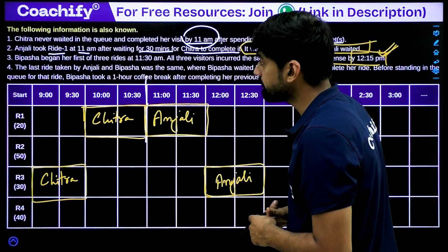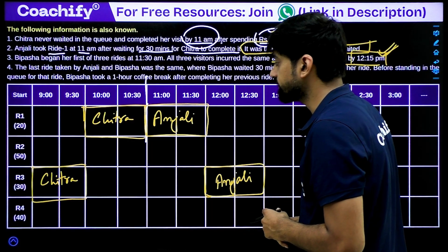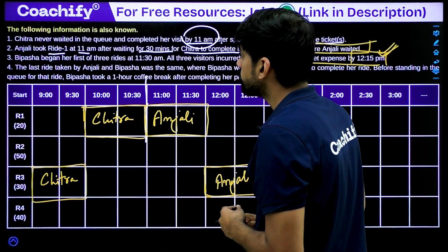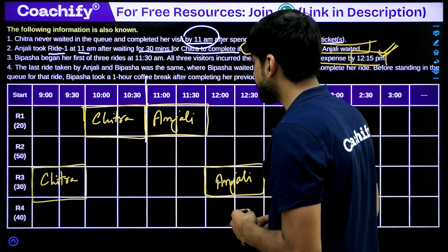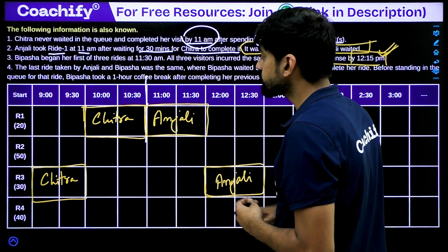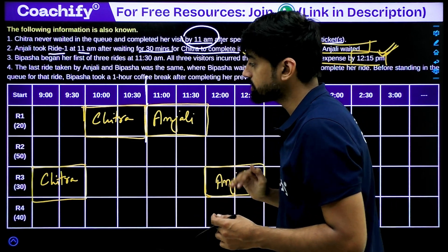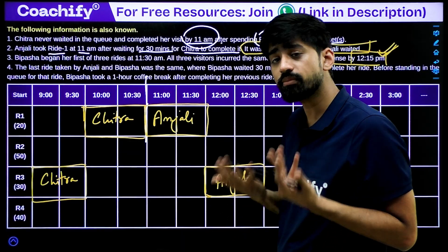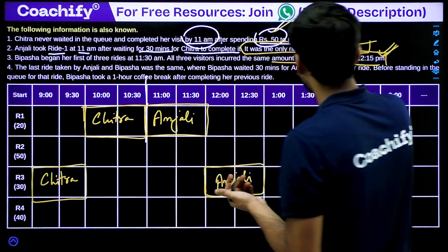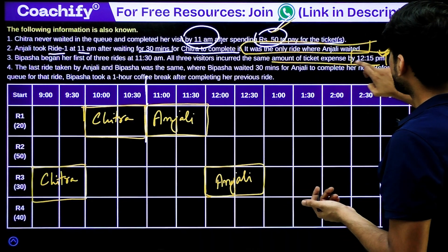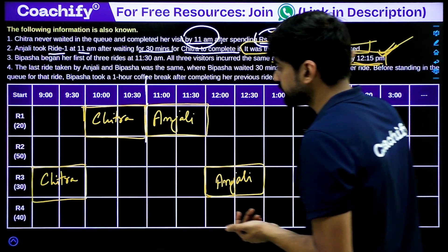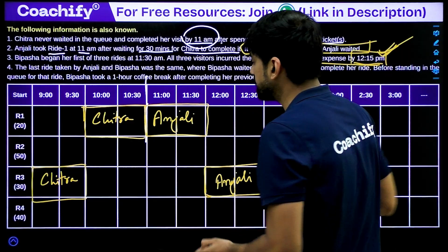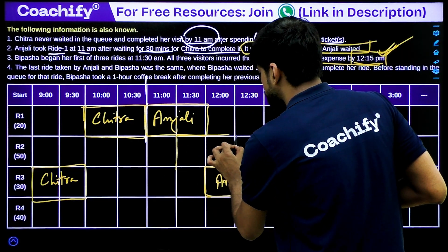Now for Bipasha: her first ride is at 11:30, and she also needs to have spent 50 rupees by 12:15. Bipasha's first ride should be ride 2 (costing 50 rupees) — so we assign Bipasha ride 2 starting at 11:30. That way, by 12:15, Bipasha has also spent exactly 50 rupees.